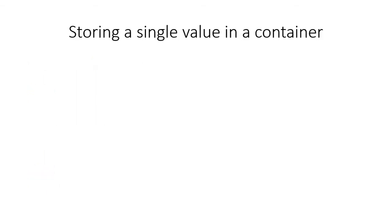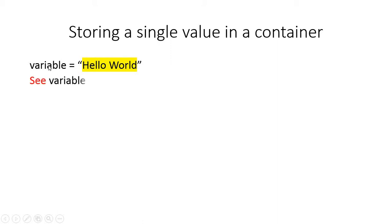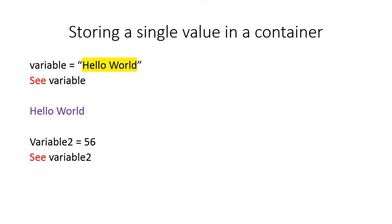To store a single value in a variable, just type the variable name, equals sign, and any string. For example, 'a = "hello world"' — when you type 'c a', hello world is printed. You can also store numeric values, like '56', and print them the same way.